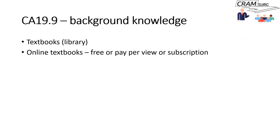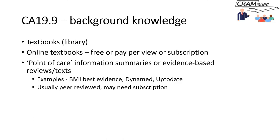The first thing you might want to do as a medical student or junior surgical trainee is to gain some background knowledge about CA-19-9. Traditionally we used to do that by going through textbooks and hard copies in the library. These days you can look up online textbooks — some are free, some require payment. Another useful source is what is referred to as point-of-care information summaries.